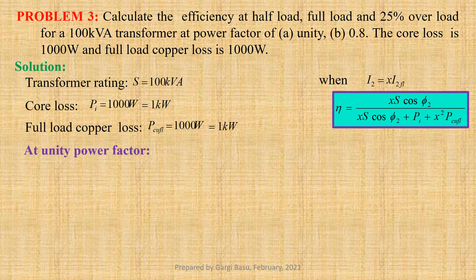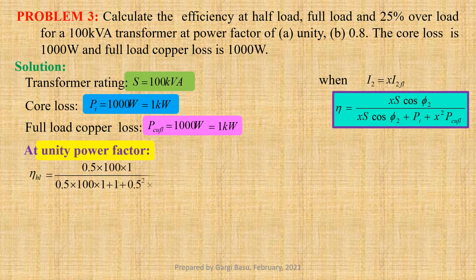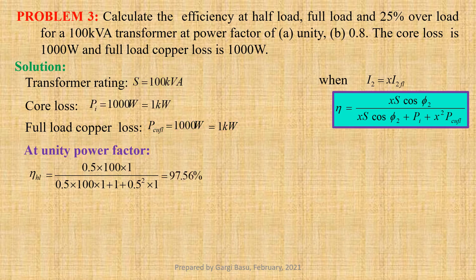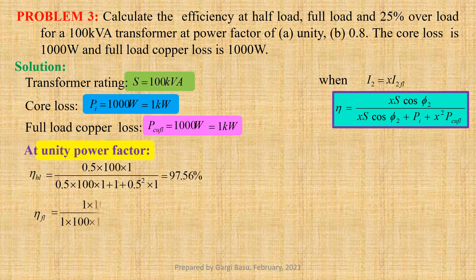At unity power factor and half load, efficiency ETA equals to 0.5 into 100 into 1 divided by 0.5 into 100 into 1 plus 1 plus 0.5 squared into 1, that gives us 97.56 percent. At unity power factor and full load, efficiency ETA_FL equals to 1 into 100 into 1 divided by 1 into 100 into 1 plus 1 plus 1 squared into 1, that gives us 98.04 percent.